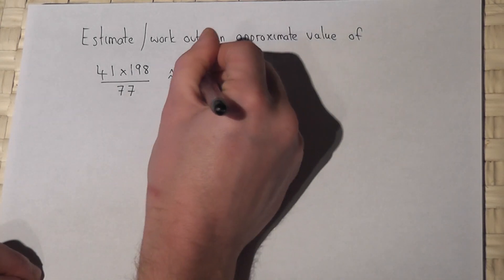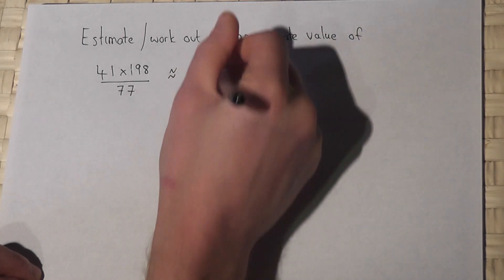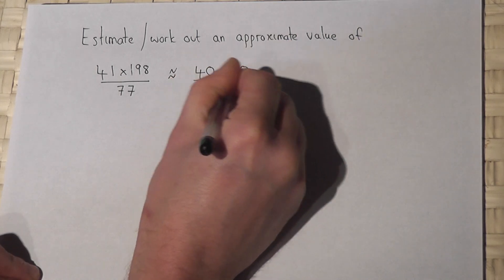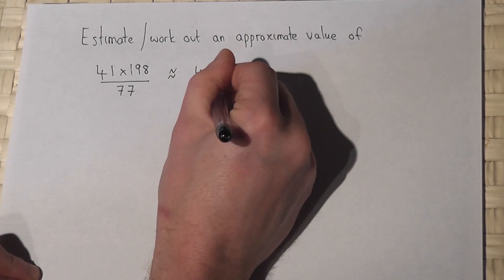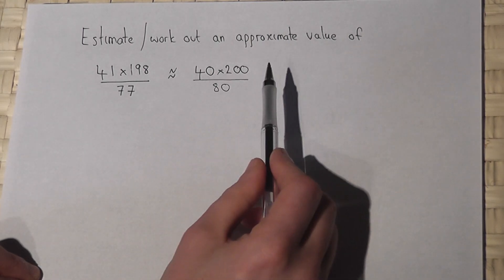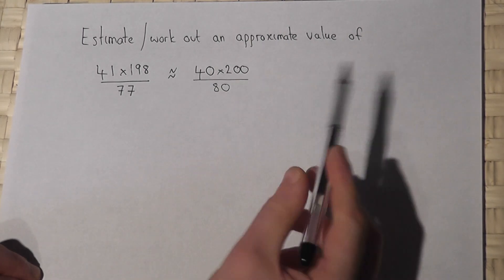So 41 is about 40, 198 is about 200, and 77 is around about 80. And then to work out the approximate value, we then just have to work out this calculation.